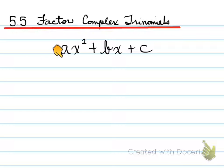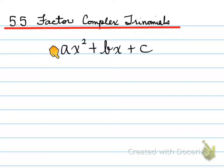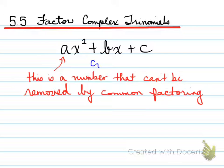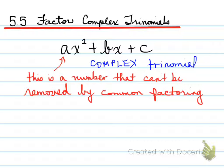Let's look at the general form: ax squared plus bx plus c. What makes it complex is the value next to x squared — the a value — is going to be a number other than 1, and this is a number that can't be removed by a common factor. That's what makes it complex.